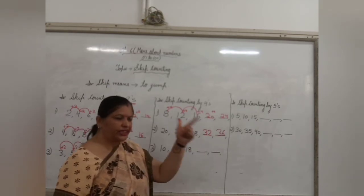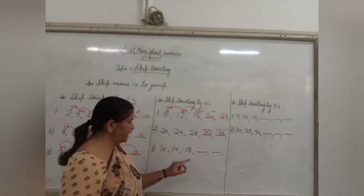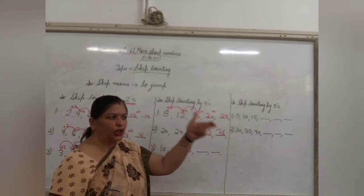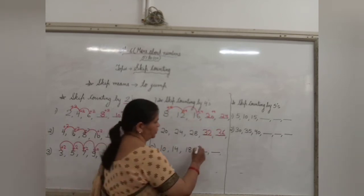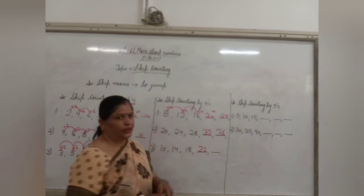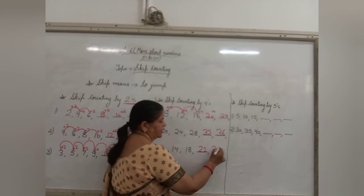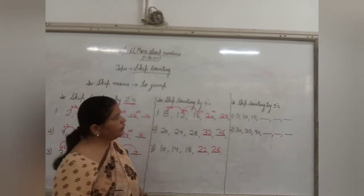After 14, 15, 16, 17, 18. I have written. Now after 18, 19, 20, 21 and 22. So 22 will come. Then 23, 24, 25, 26. Then 26 will come. Clear?